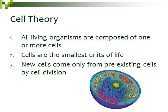We're going to review the cell theory, which I talked about in the very first chapter. The cell theory has 3 things: all living organisms are composed of 1 or more cells; cells are the smallest, most basic unit of life; and new cells can only come from pre-existing cells by some type of cell division.